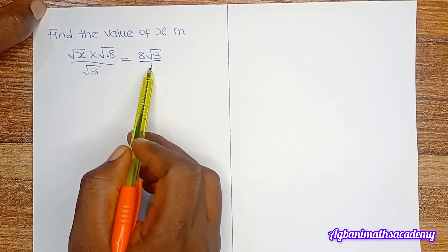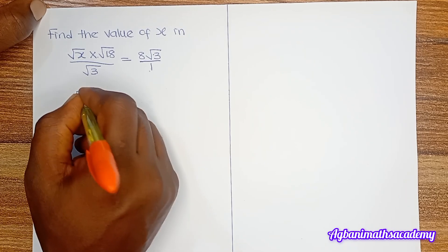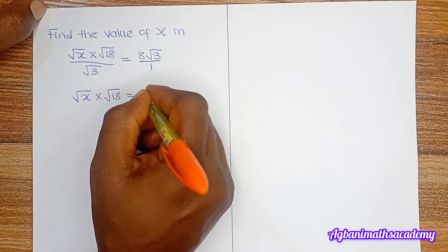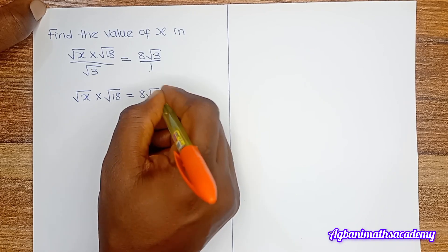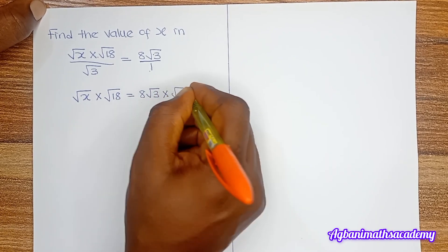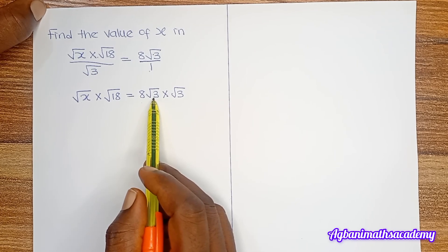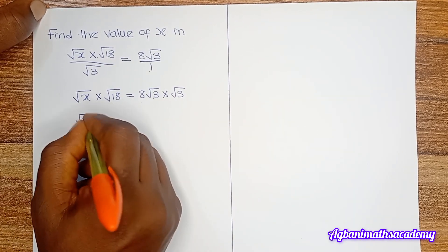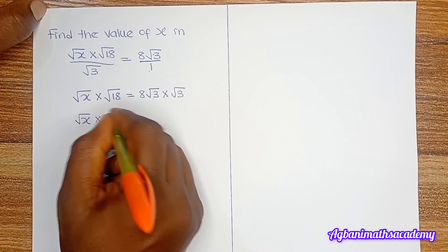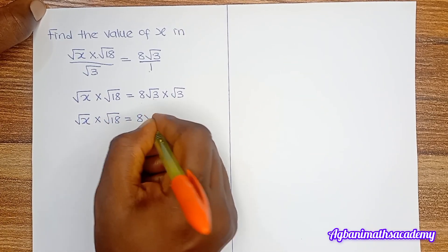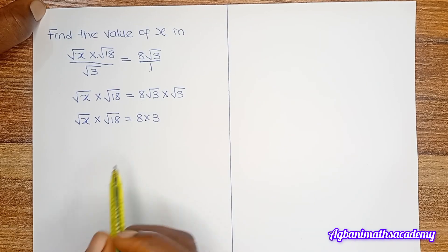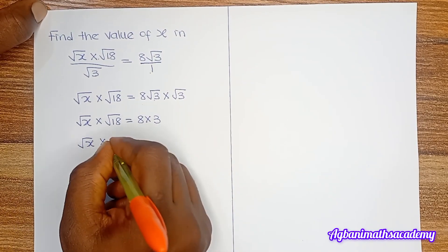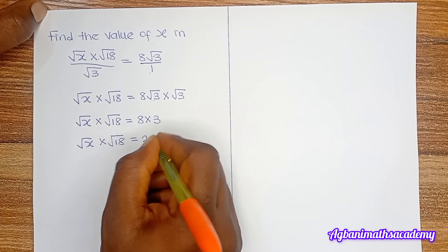When this numerator multiplies 1, it will remain the same. So we have square root of x multiplied by square root of 18 is equal to 8 root 3 multiplied by root 3. On the right, when root 3 multiplies root 3, the square roots cancel out. So we have square root of x times square root of 18 equals 8 multiplied by 3, which gives us 24.